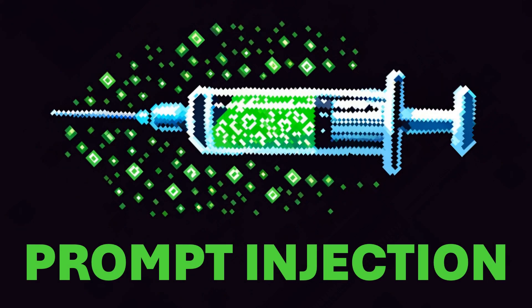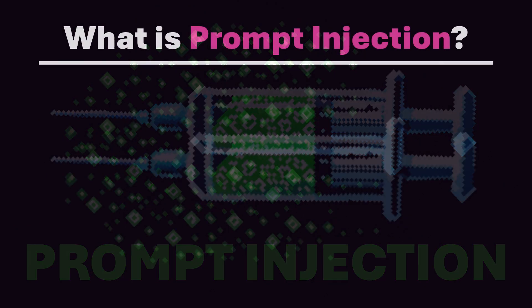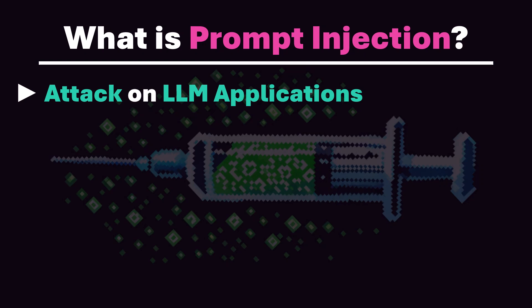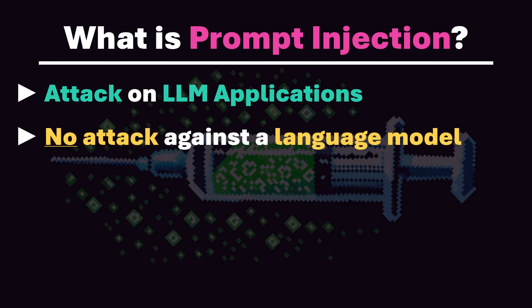Prompt injection is an attack vector on applications that use a large language model to provide certain services. Importantly, compared to other attack vectors, prompt injection targets not the AI model itself, but rather the applications built upon it.